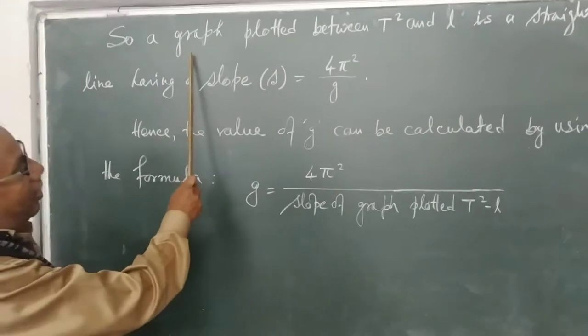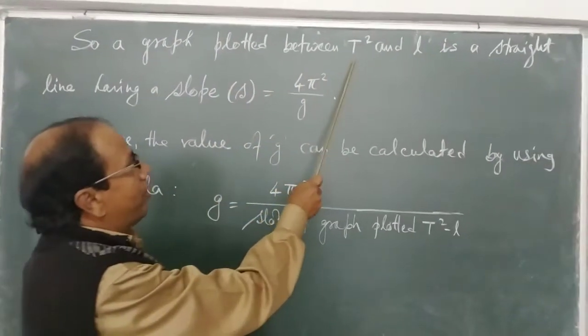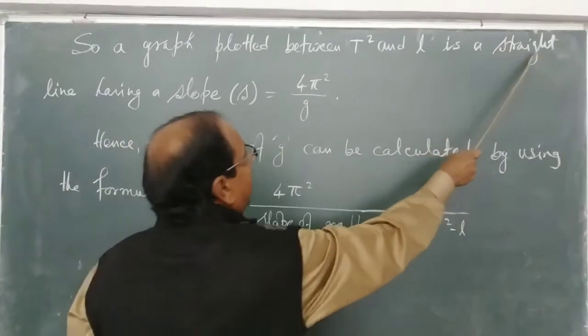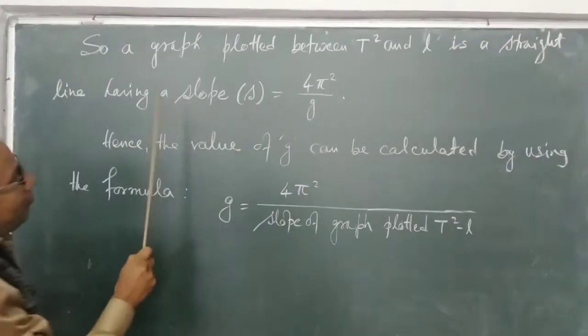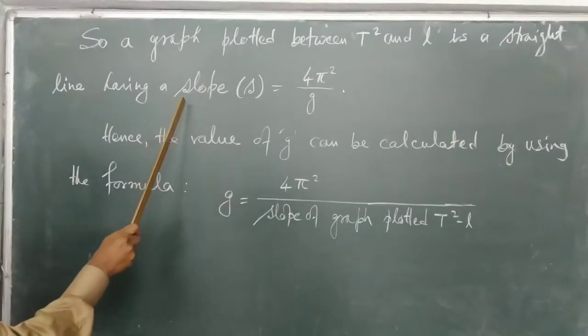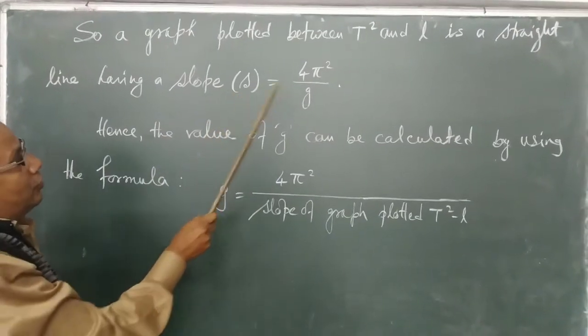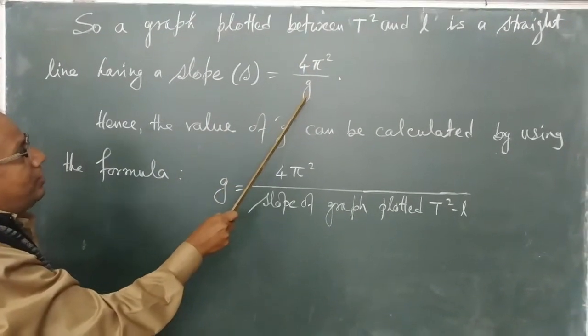So a graph plotted between T² and L is a straight line. And from this straight line we can get the slope S equals 4π²/g.